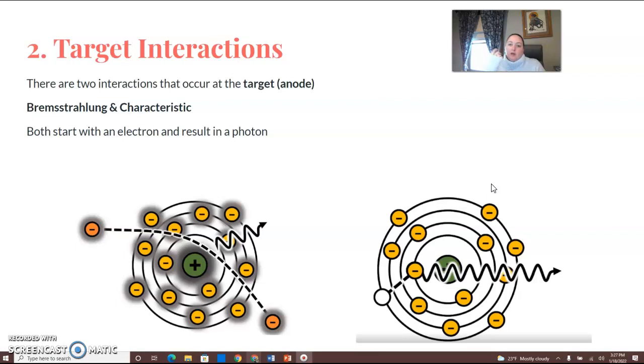So we either have bremsstrahlung or characteristic. Both of those, you will see in these pictures, start with an electron. They don't start with a wave, they don't start with that photon, they start with an incident electron.